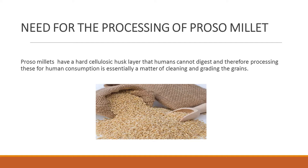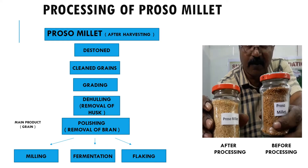Now let's move further to the need for processing. ProSomulets have a hard cellulosic husk layer that humans cannot digest, and therefore processing these for human consumption is essentially a matter of cleaning and grading the grains. This is how processed ProSomulets looks like.